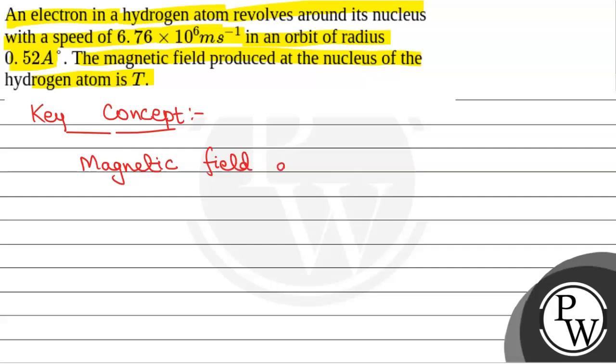Magnetic field due to moving charge: B equals mu0 by 4 pi, q v sin theta by r square.